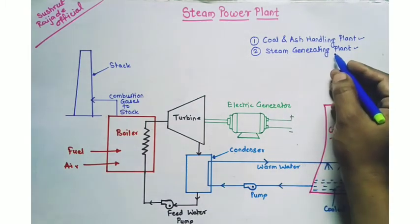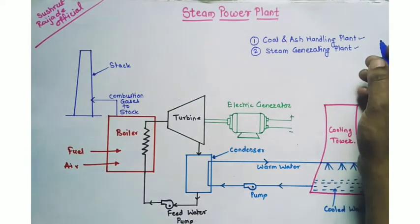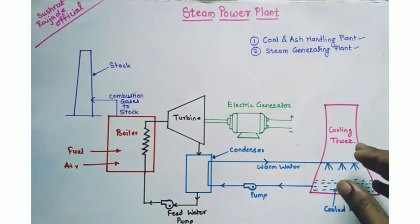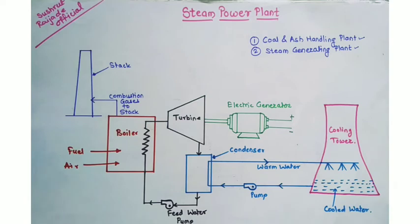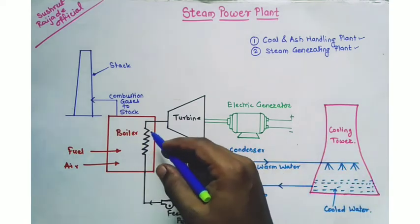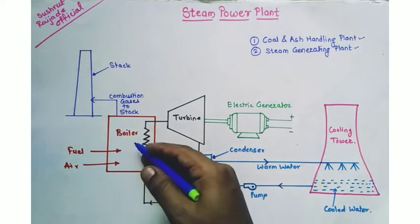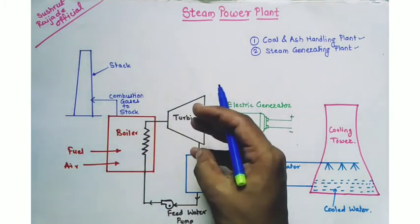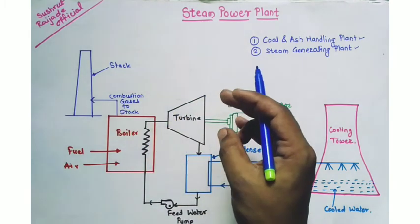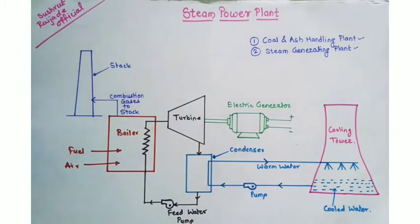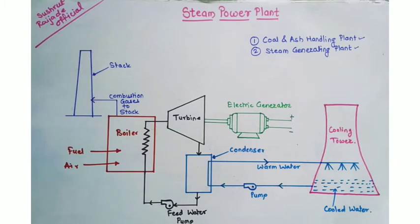The second one is the steam generating plant, in which steam is generated. The steam generating plant consists of a boiler, superheater, economizer, air preheater, steam turbine, alternator, feed water pump, and cooling arrangement.